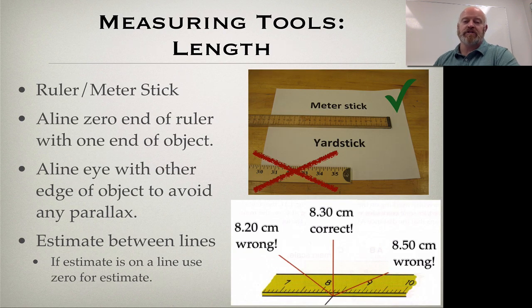Now, different measuring tools that we have, we're going to hit the four major categories of measuring. So first thing, lengths, meter sticks, rulers, those kind of things we measure for length. Remember, we do not measure with yard sticks. Those are imperial system type devices. We use a meter stick, which is about a little over 3 inches longer than a normal yard stick. Make sure you align the one end to the zero point. Align your eye with the other end of that to avoid what we call a parallax.